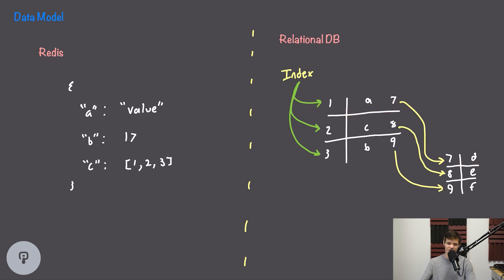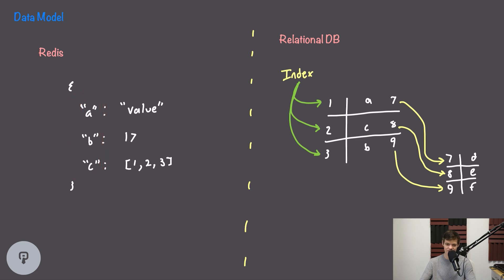With Redis, the way we access data is the same way we'd access a map or dictionary in a programming language — we're simply getting the value for a particular key. We can search through the keys, but that's not going to be an efficient operation because we have to scan through every single key in the data store. With a relational database, we can index certain columns, allowing us to efficiently look up a particular row in O(log n) time given its value for that column.